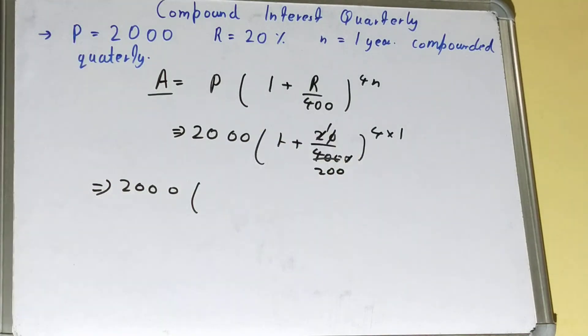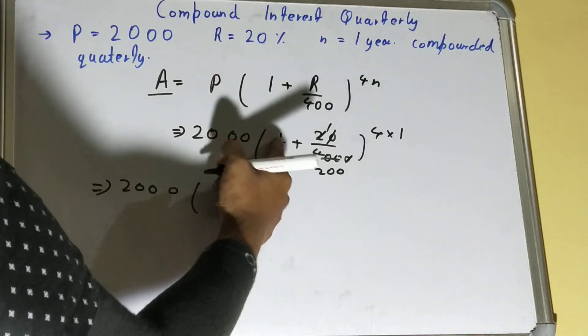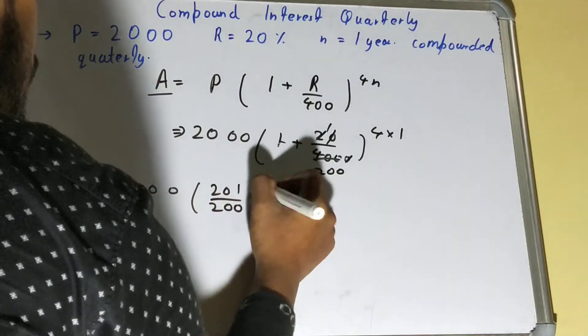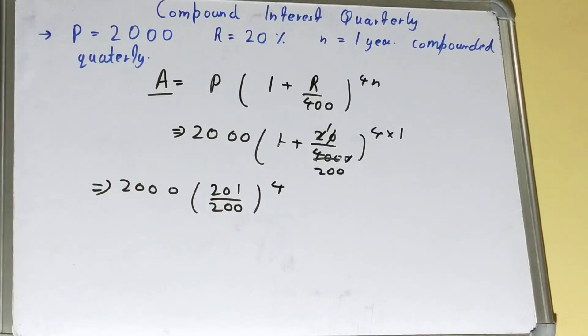If you take the LCM of it, so it will be 200, 200 plus 1, 201 upon 200, and it will be four times, right?